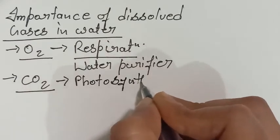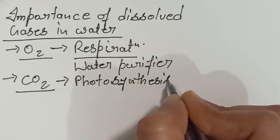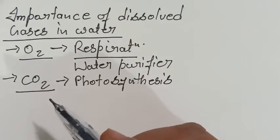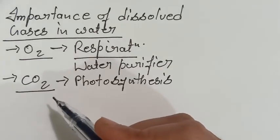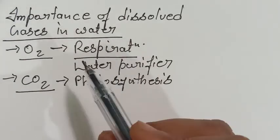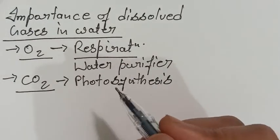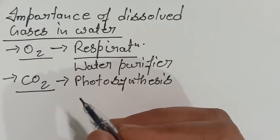All the aquatic plants, they also want to perform photosynthesis and they require some sort of carbon dioxide. So they get that amount of carbon dioxide from where? From the water itself which is dissolved in water.